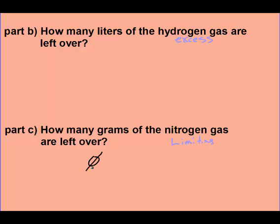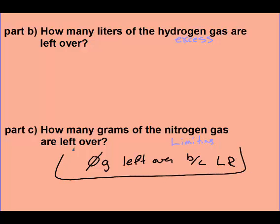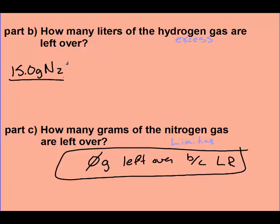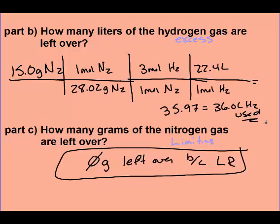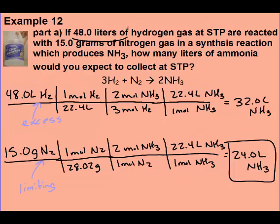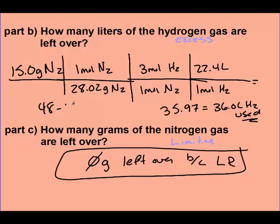The limiting reactant keeps reacting until you have no more left. The follow-up questions ask how many liters of hydrogen and how many grams of nitrogen are left over. Since nitrogen was limiting, we should have zero grams of nitrogen left over. Now we figure out how many liters of hydrogen gas are left over. We start with our limiting reactant and convert grams of nitrogen to liters of hydrogen. Converting that, you get 36 liters of hydrogen used. We started with 48 liters, so 48 minus 36 is 12 liters of hydrogen left over.